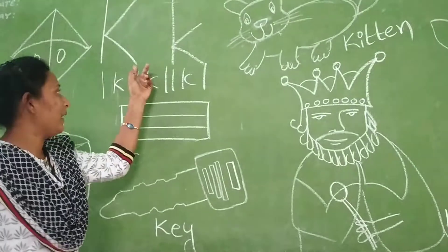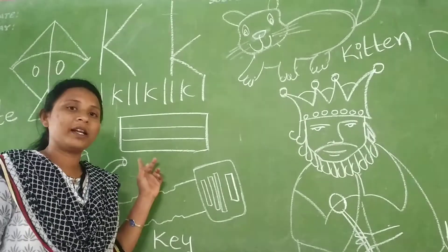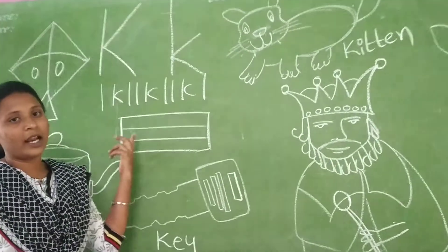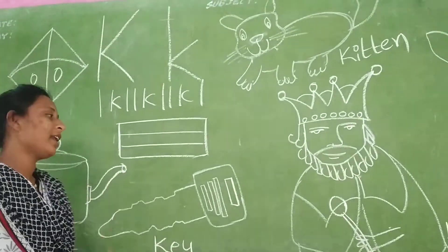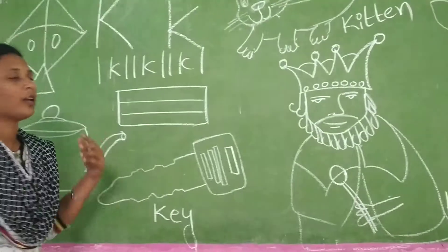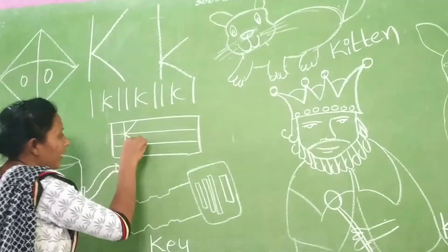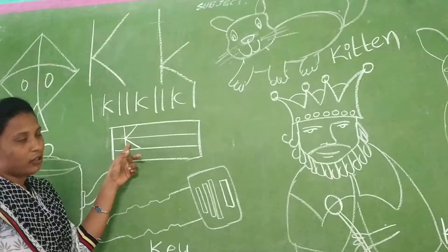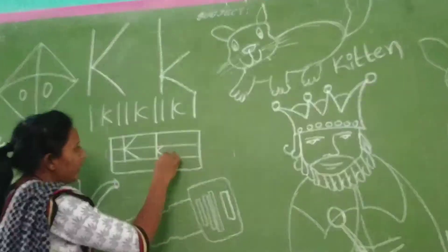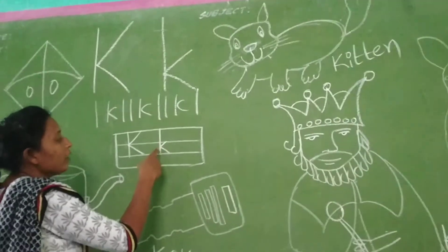We will write capital K and small K in the four lines. Now you will get the difference between capital K and small K. Most of the children are writing capital K and small K the same. Now I will show you the difference. Capital K will be in three lines, and small K will also be in three lines but small K fits in three lines and two lines.